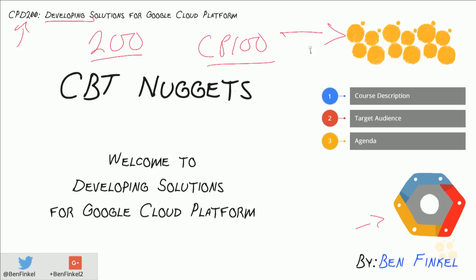Once you finish CP100 and feel comfortable with Google Cloud Platform, you can move on to these 200 level courses which, I've got to be honest, assume that you have some basic knowledge of working with Cloud Platform already. This nugget will walk you through a simple course description of CPD 200, the target audience, and an agenda for all of the nuggets inside the course.